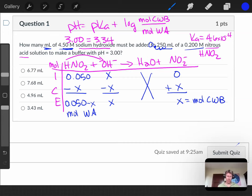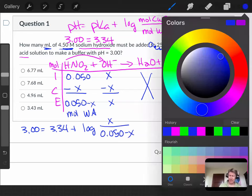So now let's write it again with all the numbers that we have. We've got 3.00 equals 3.34 plus log. Moles of conjugate weak base is going to be X. My moles of weak acid will be 0.050 minus X, and now we have one equation and one unknown. The only thing to do is to solve for that X value.